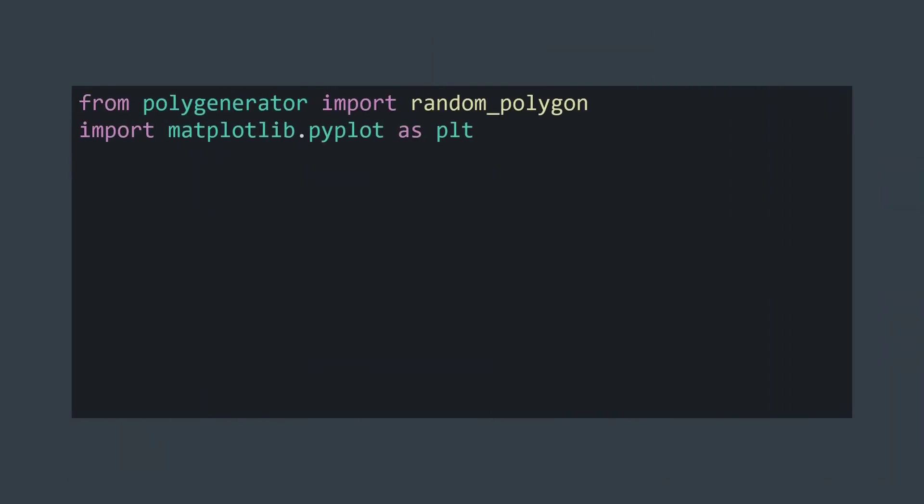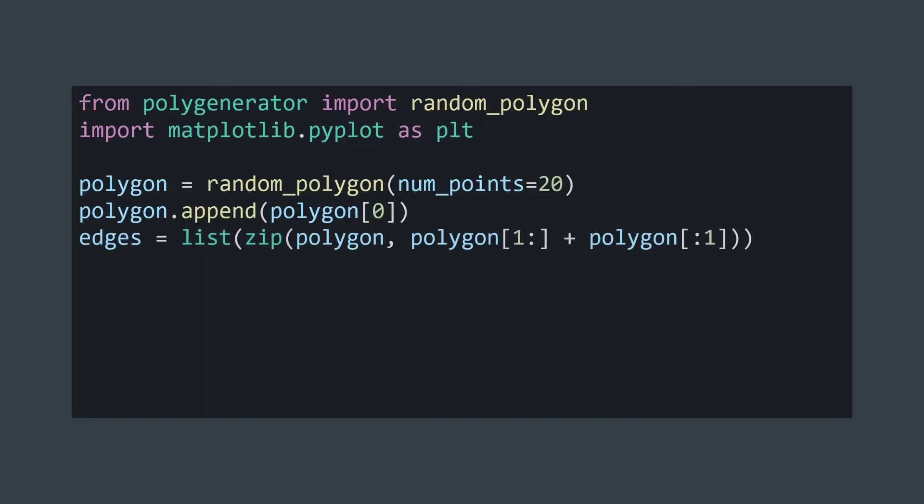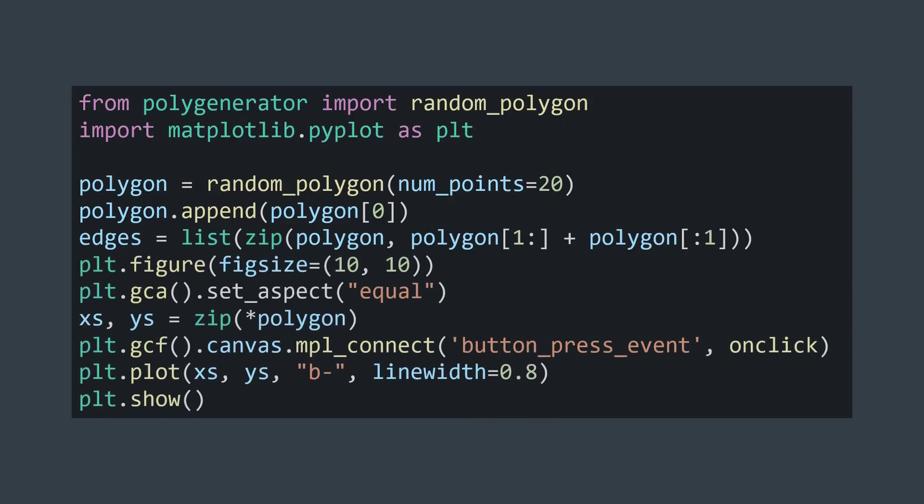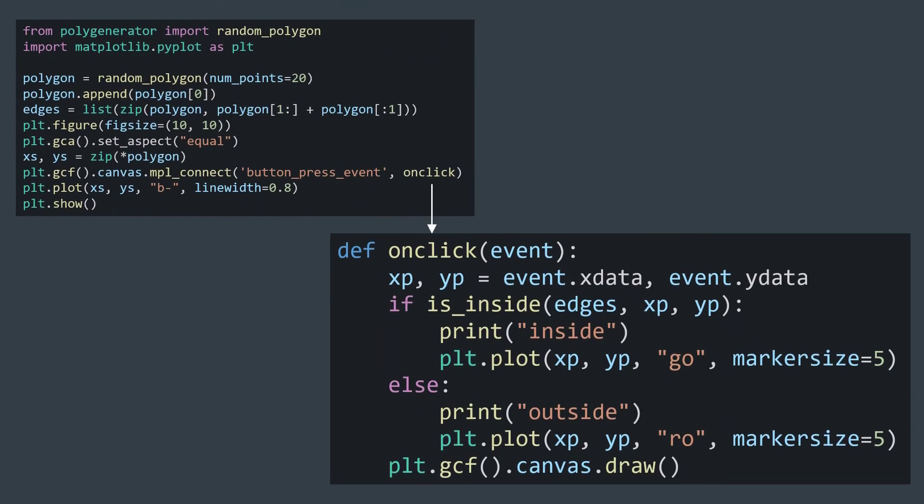To visualize it with matplotlib, we can generate a random polygon. I did it with a library named polygenerator. We extract the edges, which are just combinations of successive vertices. We draw our polygon, and we add an onClick event that takes coordinates of our click, and displays a green dot if it's inside the polygon, and red dot if it's outside. Here is the result.